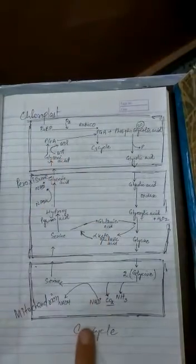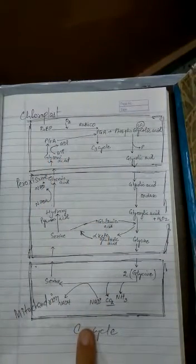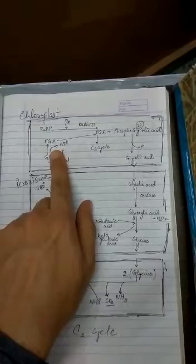There is liberation of carbon dioxide from the mitochondria and utilization of ATP in the chloroplast. In the photorespiratory pathway there is no synthesis of ATP and no synthesis of NADPH. Therefore, this is a wasteful process.